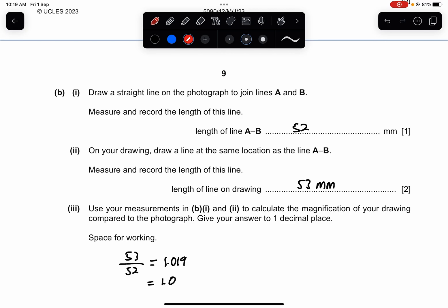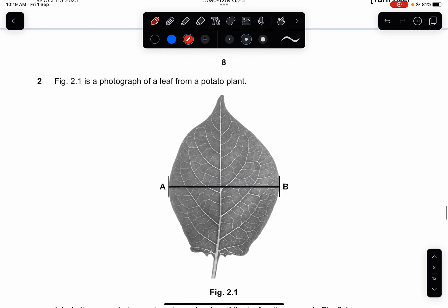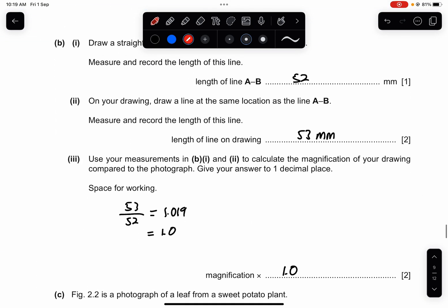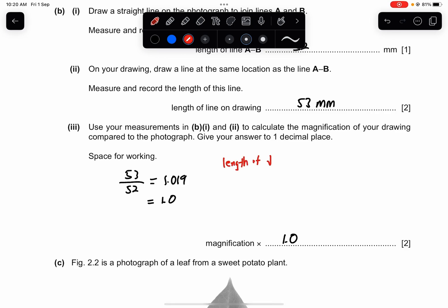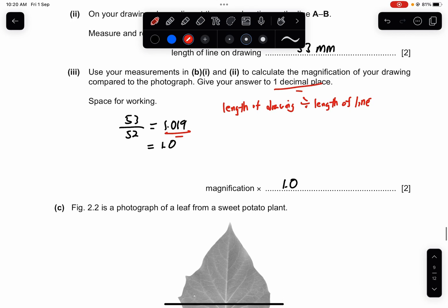Part B1. Draw a straight line on the photograph to join lines A and B. Measure and record the length of this line, which is 52mm. Part 2. On your drawing, draw a line at the same location as the line A to B. Measure and record the length of this line. So the length of the line on drawing which I draw from A to B will be 53mm. So use your measurement in B part 1 and part 2. Calculate the magnification of your drawing compared to the photograph. Give your answer to 1 decimal place. So the formula is that you have to find the length of the drawing divide by the length of line, which I will get 1.019. And if it is 1 decimal place, it will be 1.0. So the answer is times 1.0.